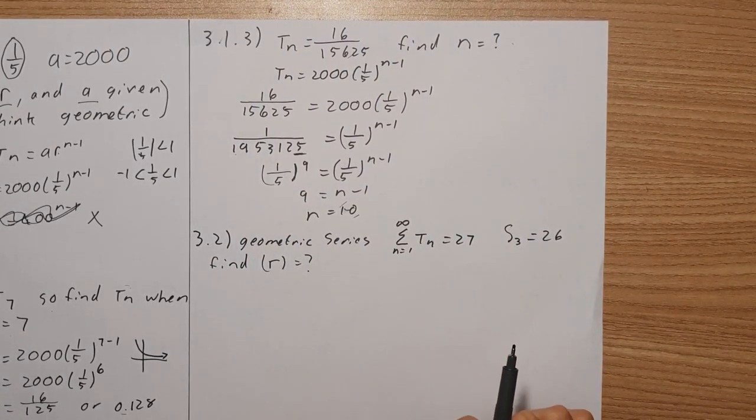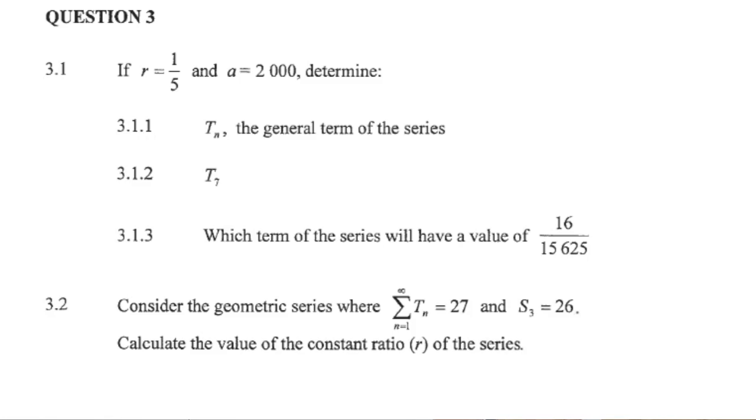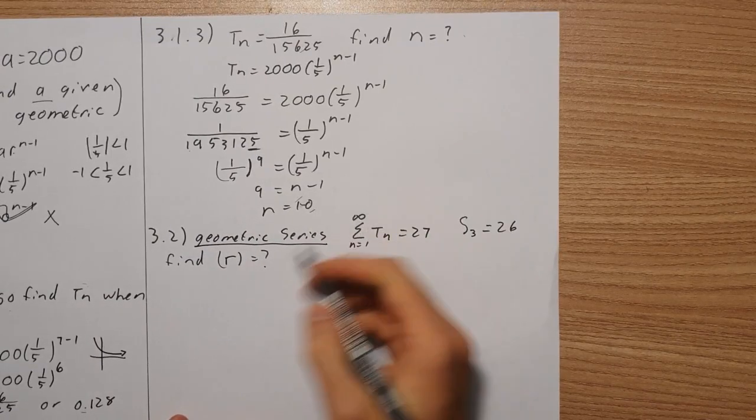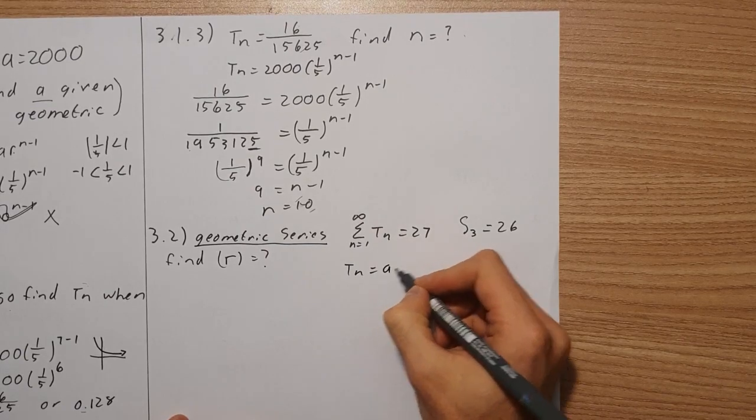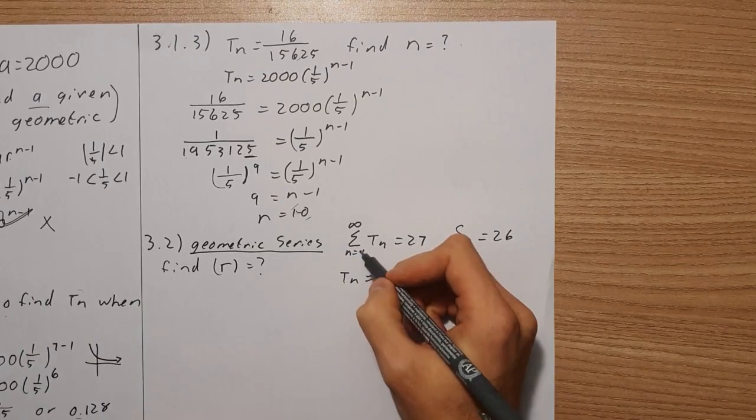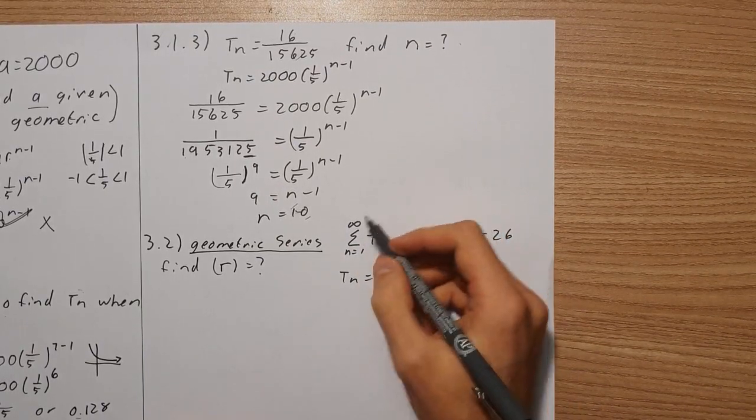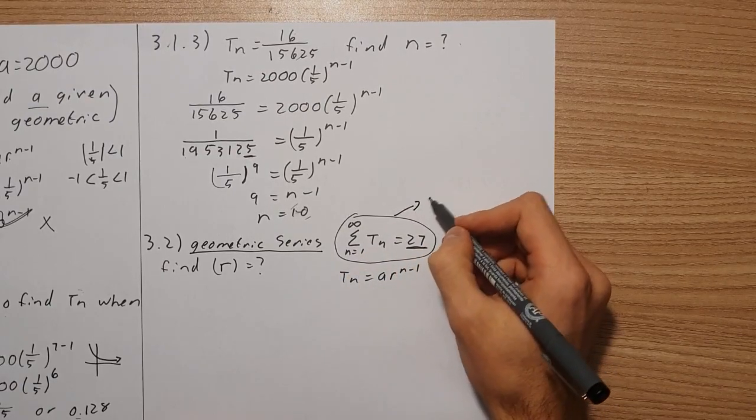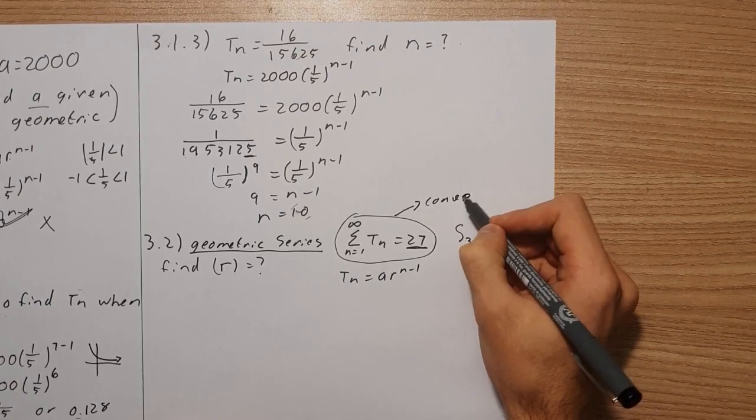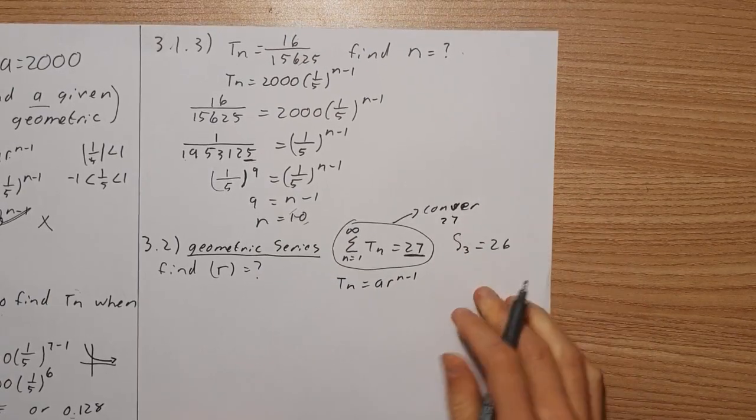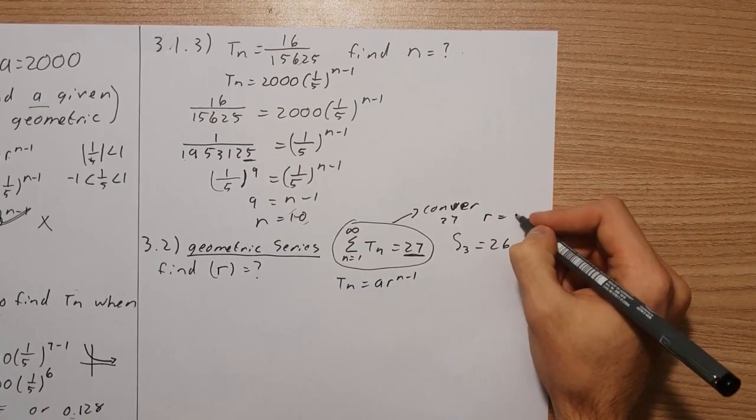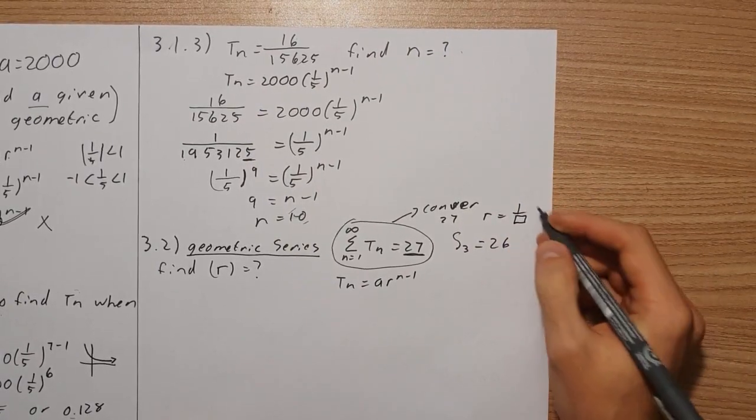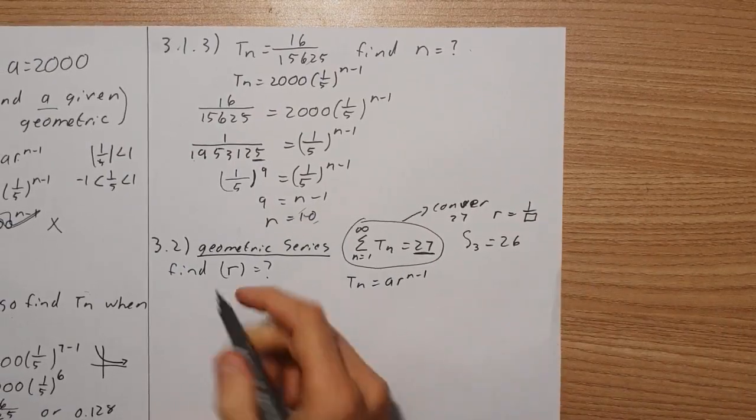Now let's look at 3.2. It says consider the geometric series where the sum from 1 to infinity of Tn equals 27 and S of 3 equals 26. It's a geometric series, so we're using Tn equals a times r to the n minus 1. We can see that the sum to infinity of Tn equals 27, which means this whole thing will converge. Therefore r must be a ratio of some sort, something over something, 1 over something. Now we want to find r.